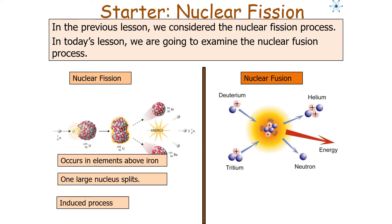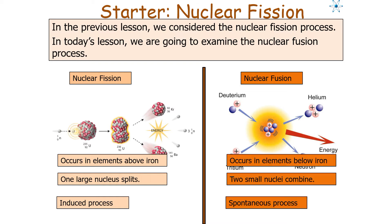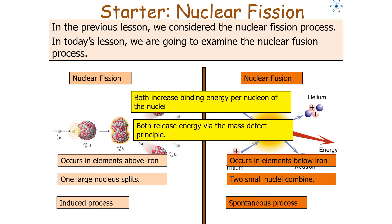Nuclear fission occurs in elements above iron — it's when one large nucleus splits, and it tends to be an induced process by firing a neutron at that nucleus. Nuclear fusion occurs in elements below iron — it's when two smaller nuclei combine, and it tends to be a spontaneous process. But both events increase the binding energy per nucleon of the nuclei and both events release energy by the mass defect principle.